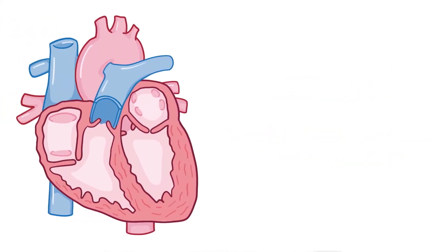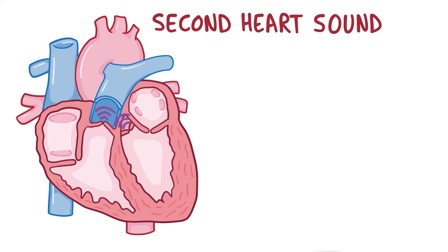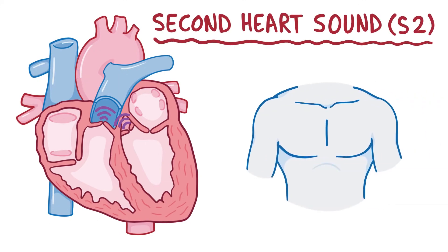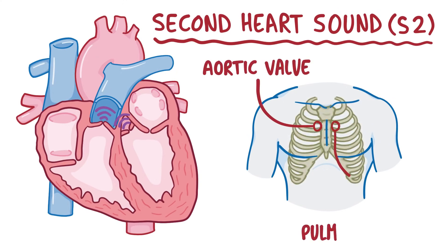Eventually, the ventricles finish squeezing, so these two valves close down, making a short, sharp sound that sounds a bit like a dub. And this dub is called the second heart sound, or S2. This is heard loudest in the aortic valve and pulmonary valve areas.